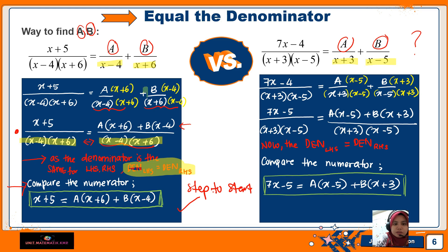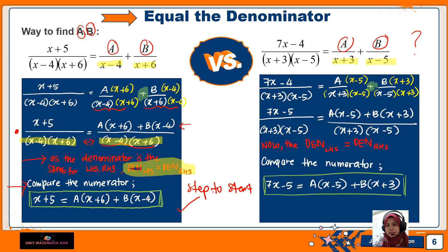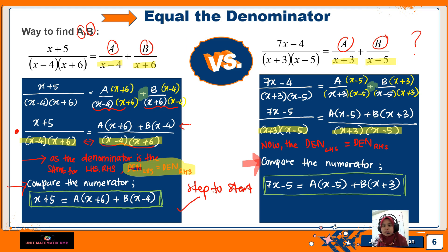We multiply by the other linear factor top and bottom so both sides share the same denominator. Then we compare the numerators. You get the equation inside the green box — this is the step for finding A and B, not the final answer yet.